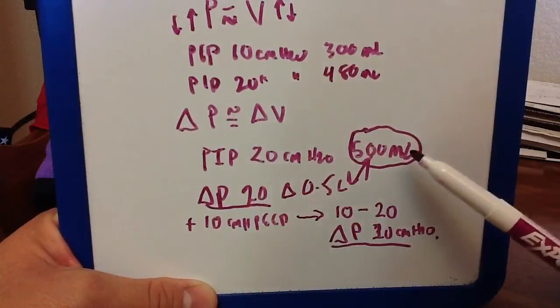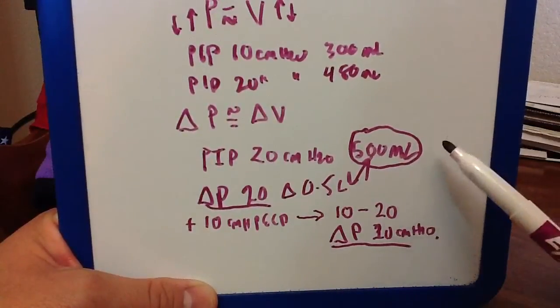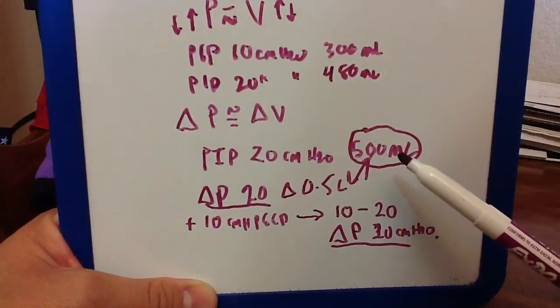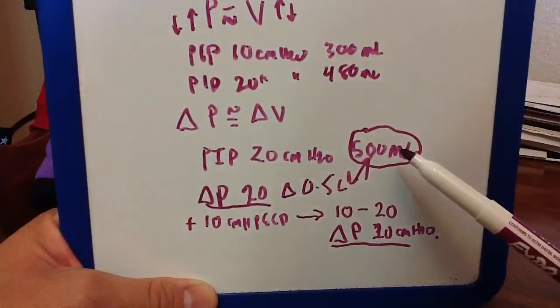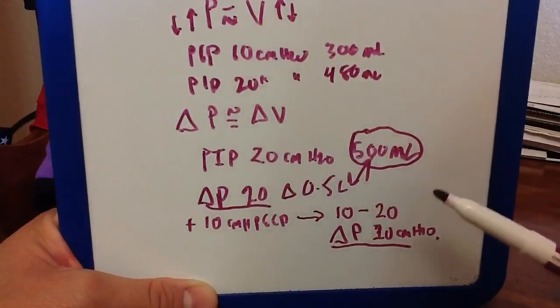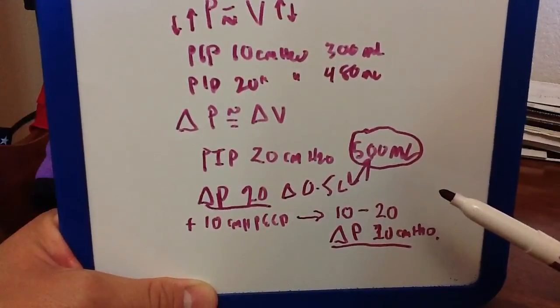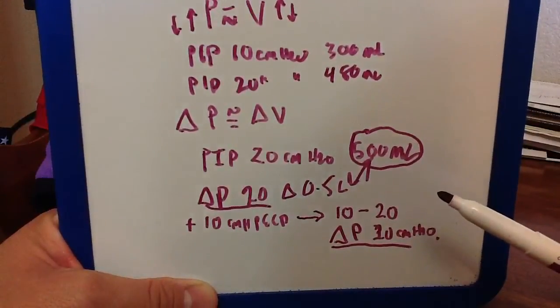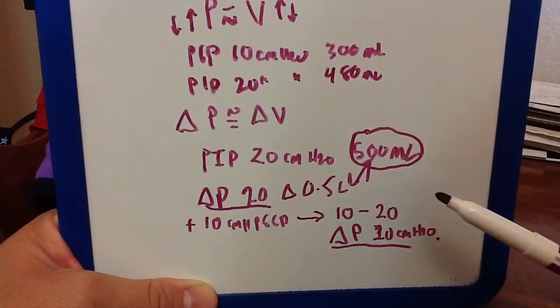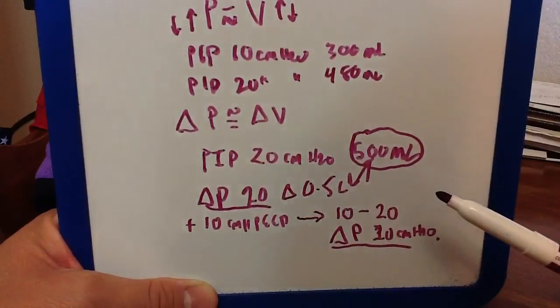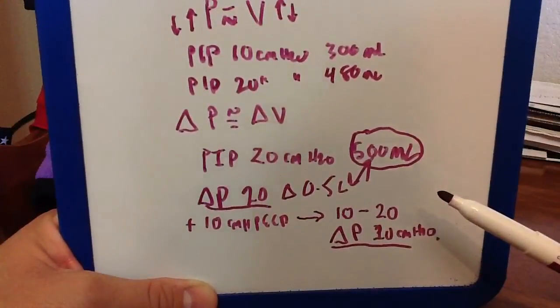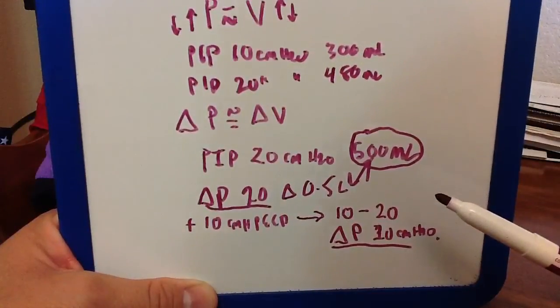Now, that's not to say that this relationship will be linear, that I'll have a tidal volume of 250 milliliters. That's not the relationship at all. It's probably going to approximate some sort of exponential function or maybe even a sine function, depending on compliance and resistance. So it's not a linear function, it's going to be more complicated than that.